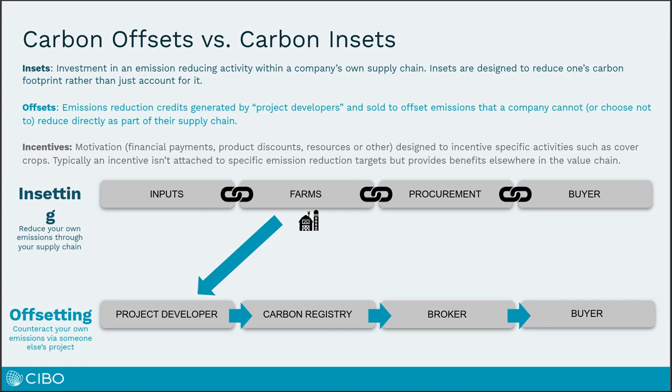The idea is that an offset would allow an organization that is polluting to essentially write off that pollution because of a purchase of an offset elsewhere. It is in some ways a permission structure to pollute because we're agreeing it's acceptable for that pollution to go into the atmosphere. Doesn't mean that offsets aren't great and that they serve an important purpose. Billy and I were talking about the bathtub analogy earlier.